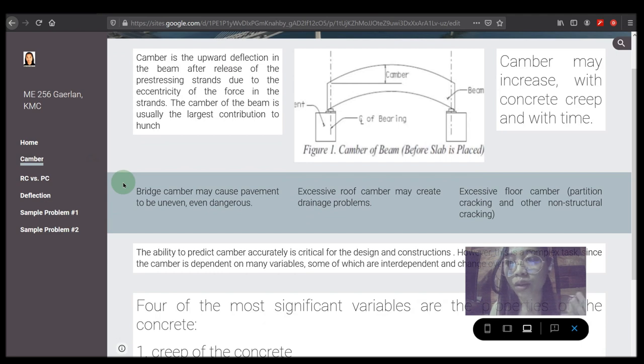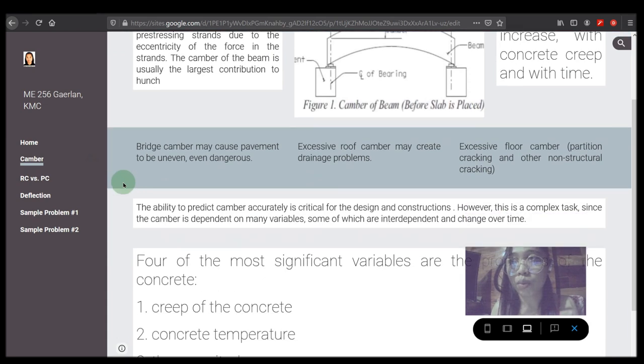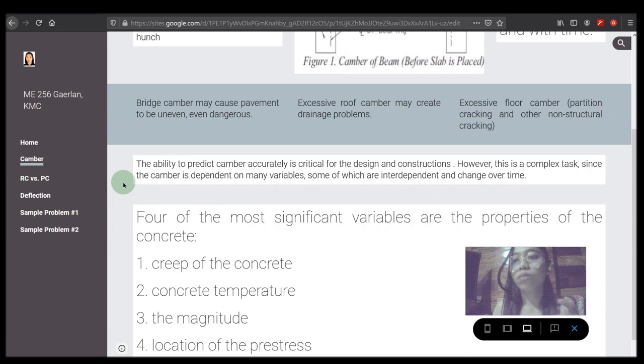Excessive roof camber may create drainage problems. Excessive floor camber leads to partition cracking and other non-structural cracking. Bridge camber may cause pavement to be uneven and even dangerous.